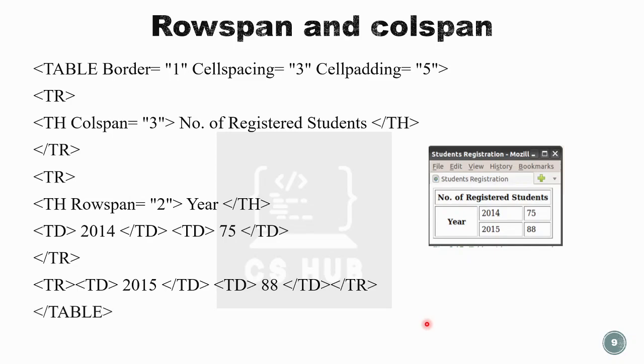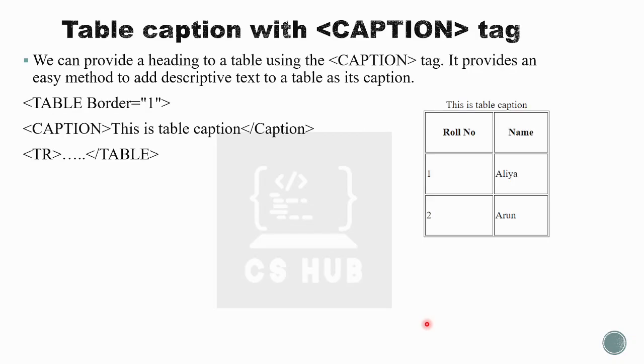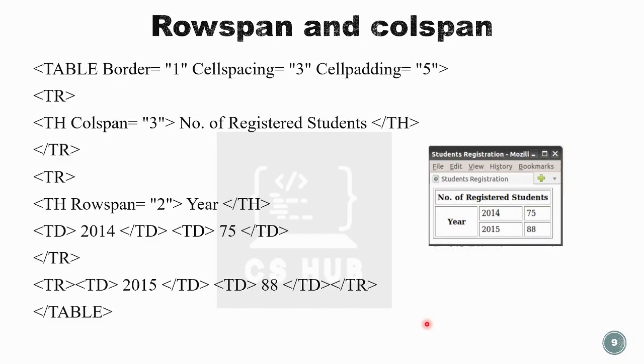Once all rows and cells are complete, close the table tag and close the html. This is how we create a table with rowspan and colspan.